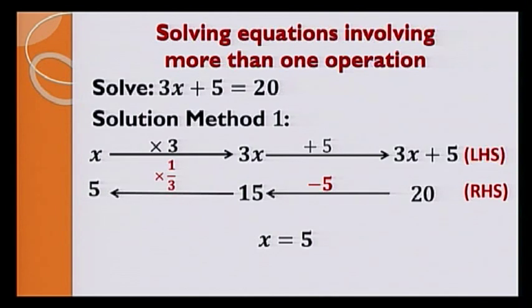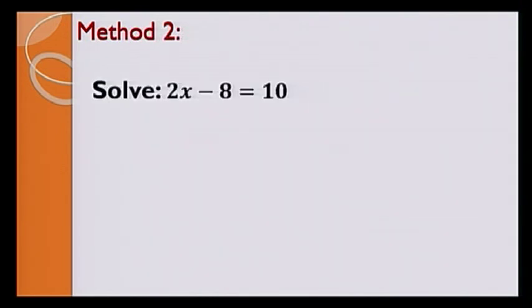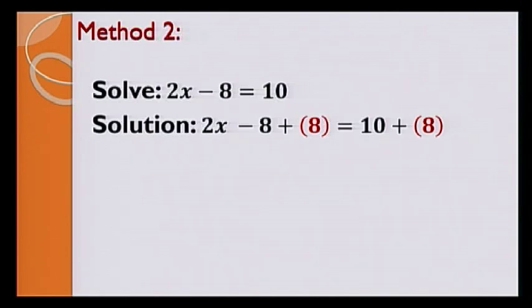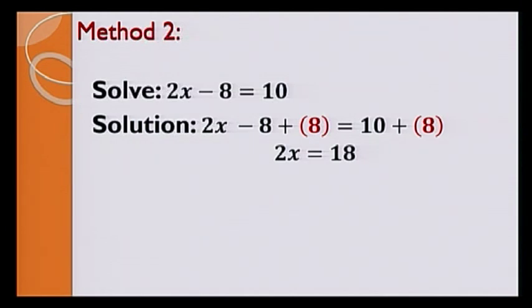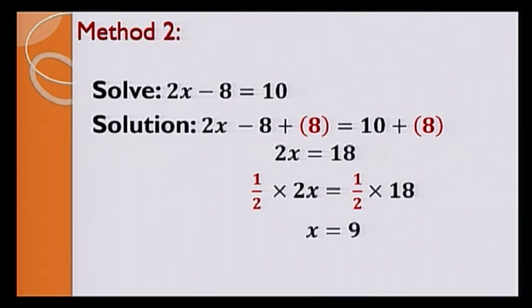It is not convenient to draw a flowchart, so let's look at method 2. Solve 2x minus 8 is equal to 10. To eliminate minus 8, we add 8 on both sides, getting 2x is equal to 18. Now, to eliminate the coefficient 2 on the left-hand side, we multiply both sides by half. The solution is x is equal to 9.